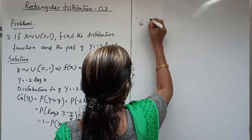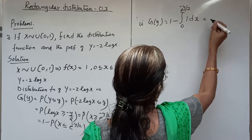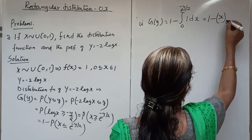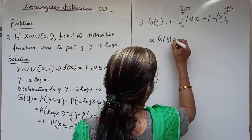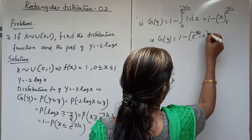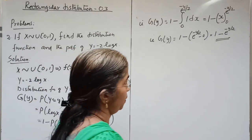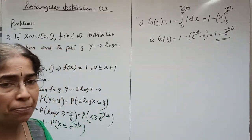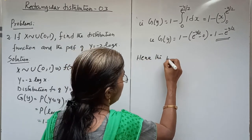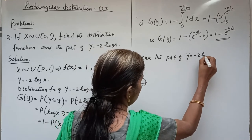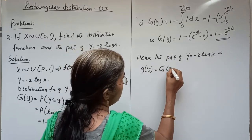So G(y) = 1 - integral from 0 to e^(-y/2) of 1 dx = 1 - [x] from 0 to e^(-y/2) = 1 - e^(-y/2) - 0 = 1 - e^(-y/2), which is the distribution function of Y. Now we obtain the corresponding PDF by differentiating the distribution function. The PDF g(y) = G'(y) = d/dy of G(y).